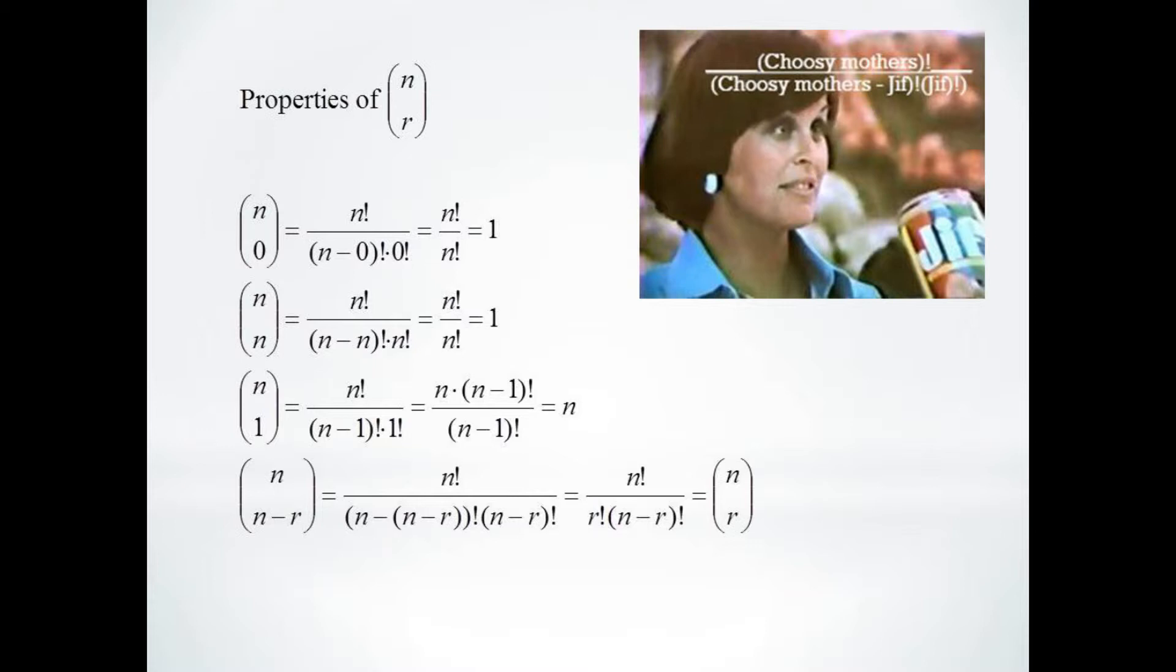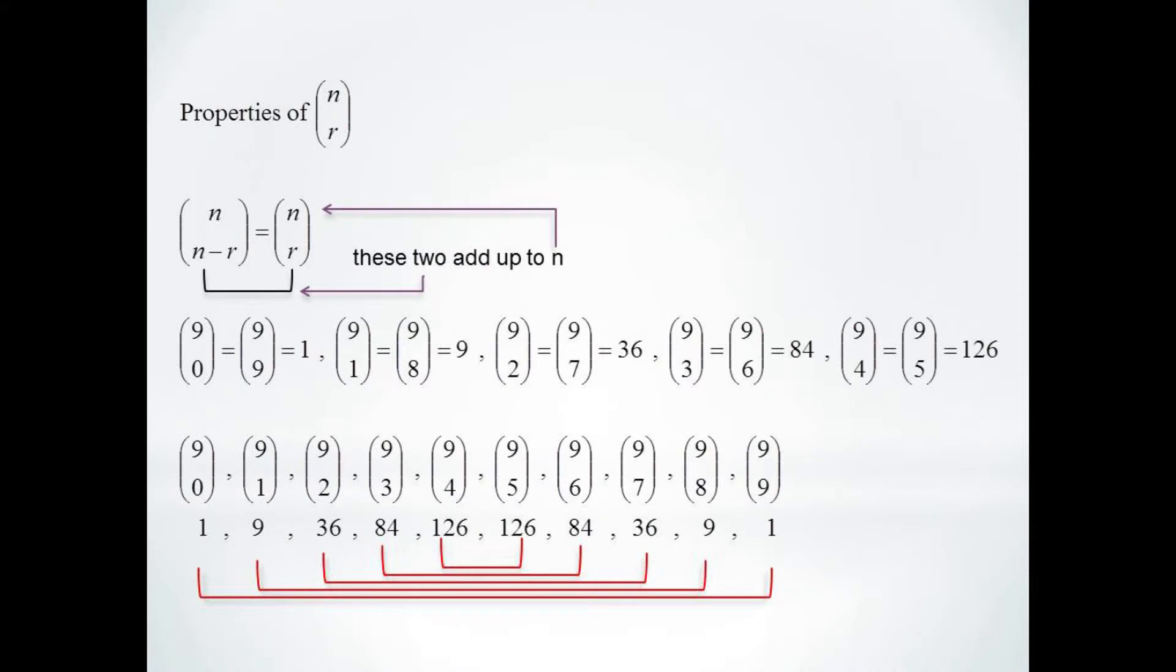And an important property for us is that n choose n minus r equals n choose r. This is because when we substitute n minus r, the factorials in our denominator flip. This says if the numbers on the bottom add up to the number on the top, then the results will be the same.